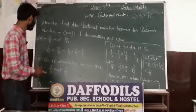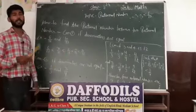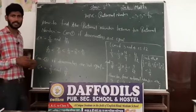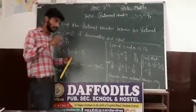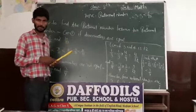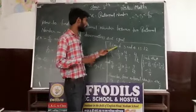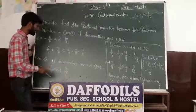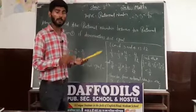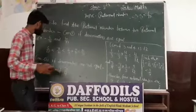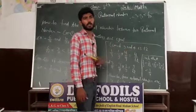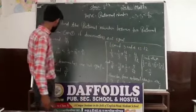Firstly, our motive will be to make the denominators equal. If the denominators are equal, I think you can find the rational number easily. How do we change them into equal denominators? I have told you this method in the addition lesson. First of all, we need to find the LCM of the two denominators.